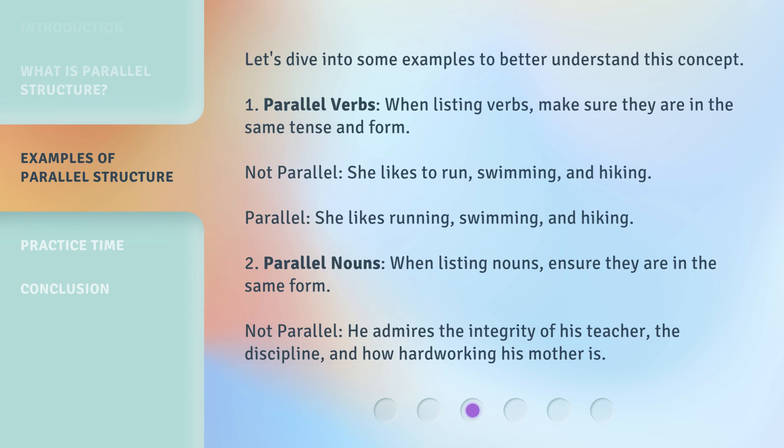Let's dive into some examples to better understand this concept. 1. Parallel Verbs — when listing verbs, make sure they are in the same tense and form. Not parallel: "She likes to run, swimming, and hiking." Parallel: "She likes running, swimming, and hiking."